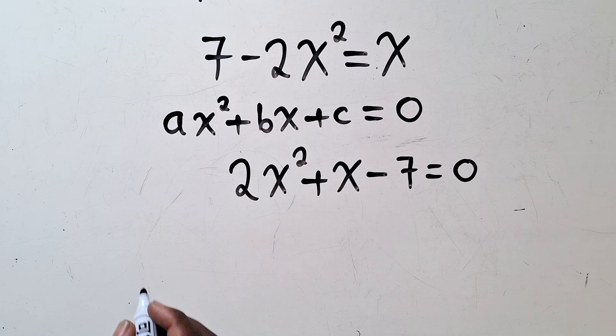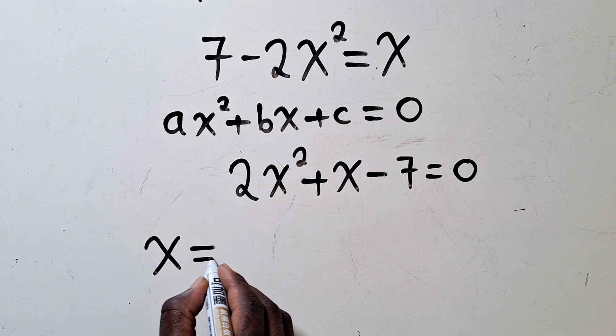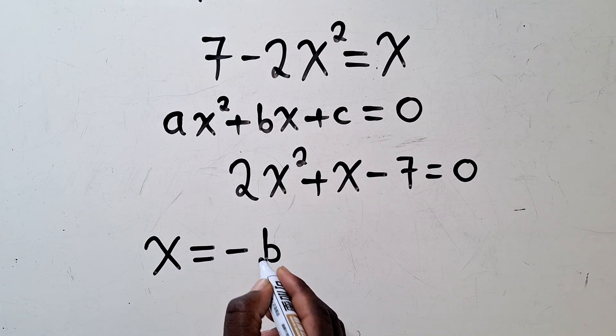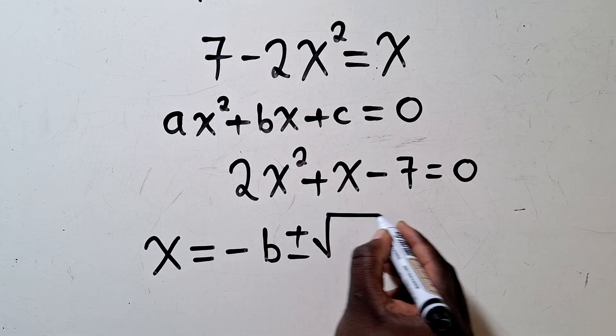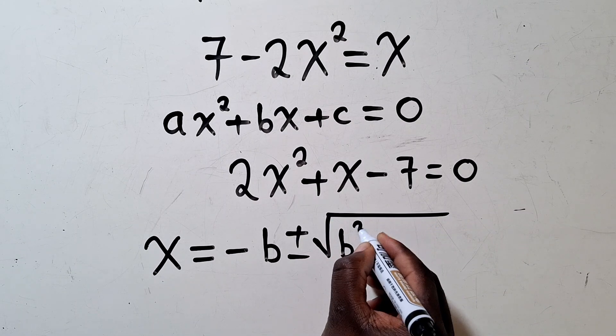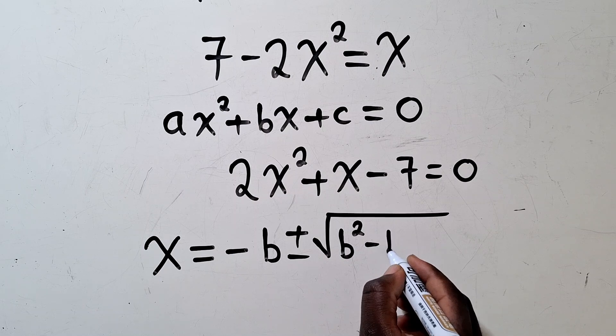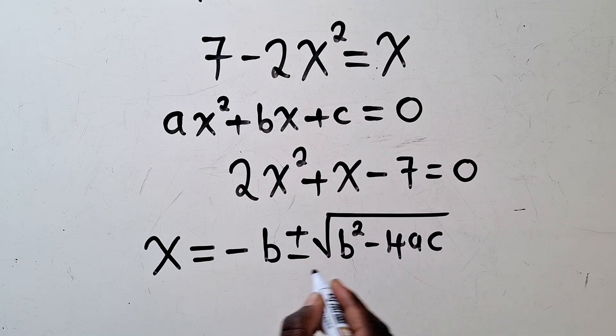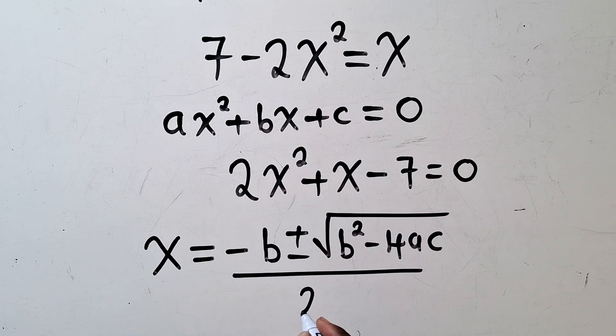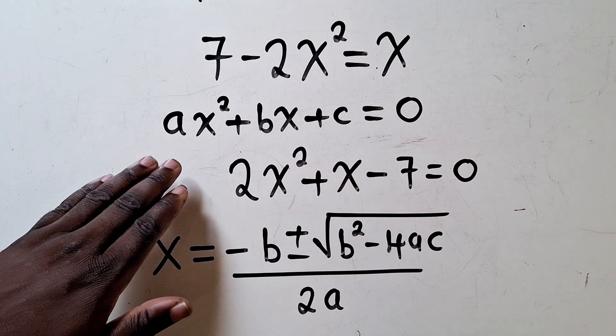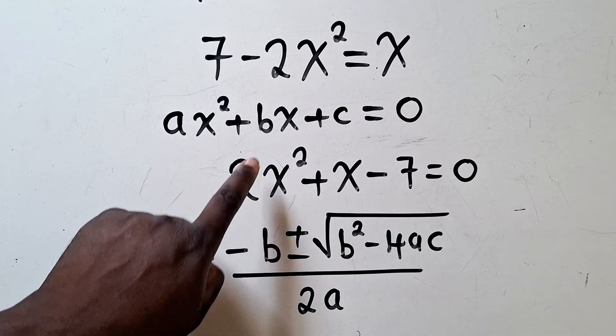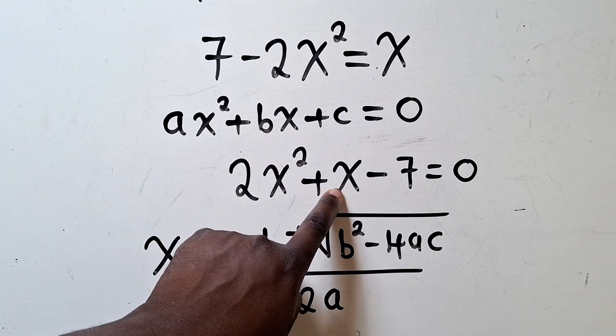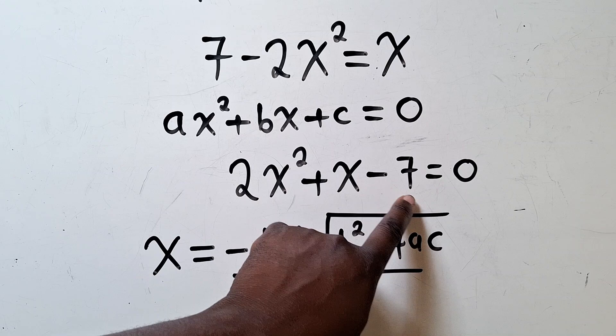And when we write it in standard form, we now use quadratic formula, which of course looks like this. This is what we call quadratic formula. Without wasting our time, we can see that this is a, meaning our a is 2. This is b, our b is 1. This is c, our c is negative 7.